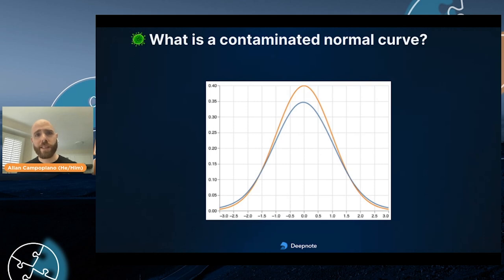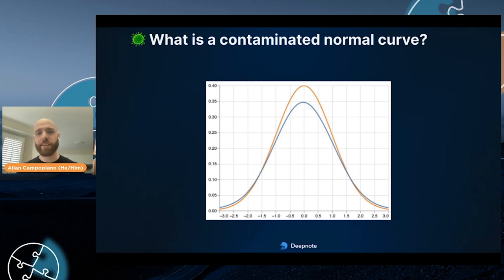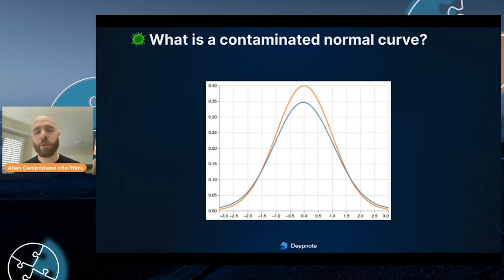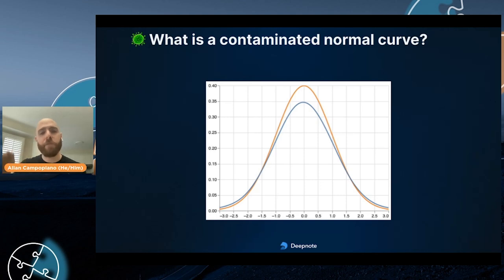So first things first, what is a contaminated normal curve? Just curious, as you're looking at this chart, which distribution do you think is a standard normal distribution, and which do you think is a contaminated normal distribution? It turns out that the blue curve is contaminated. The giveaway is that if you look at the tails of the distribution, the blue distribution has slightly heavier tails — in other words, there are just more outliers.